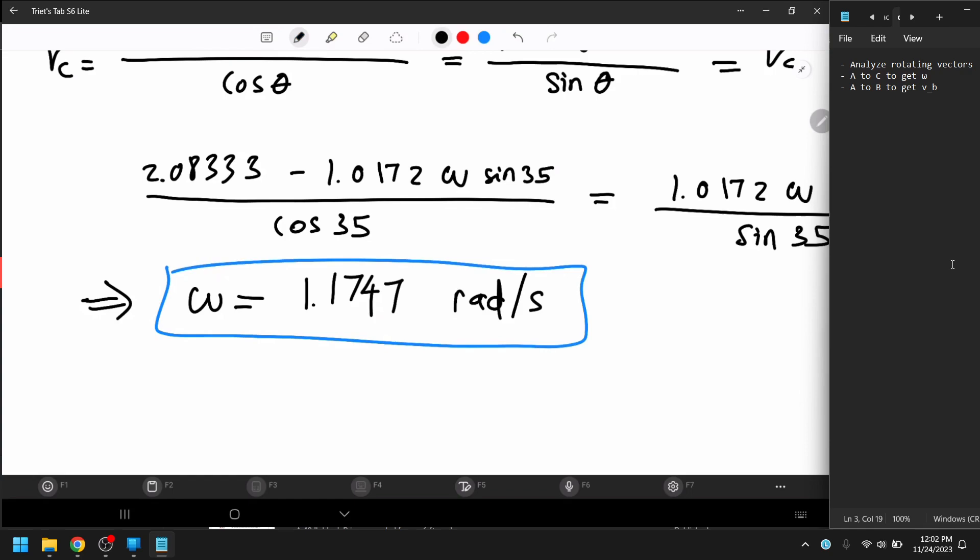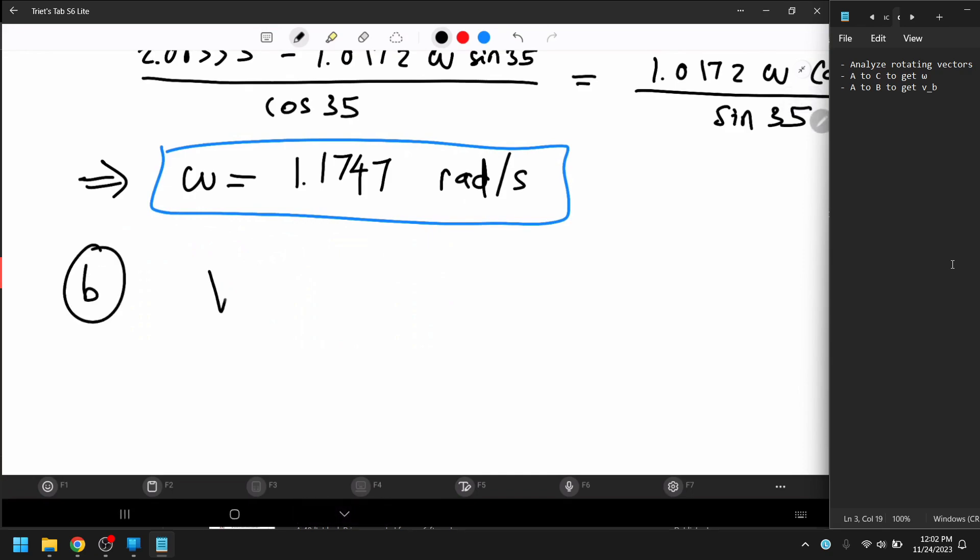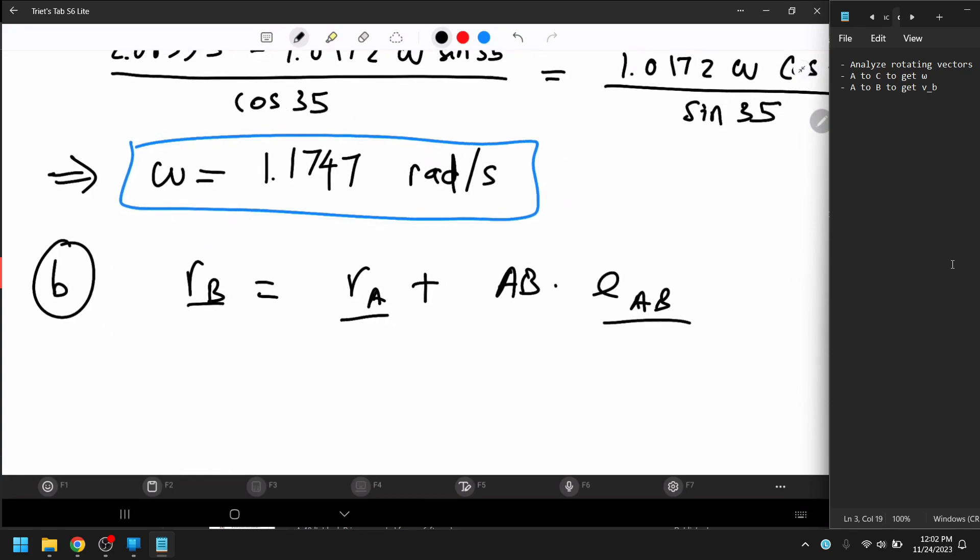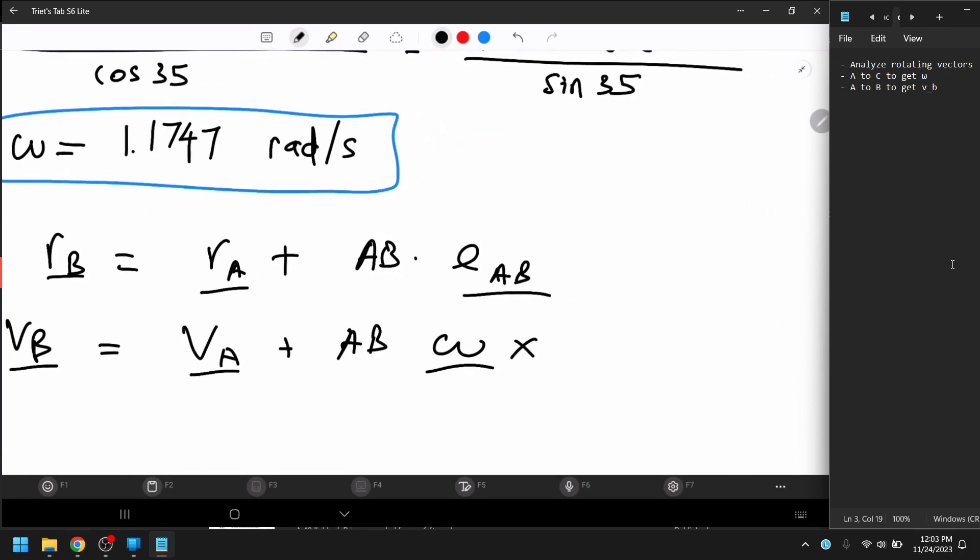And then, we're going to now, for B, we're going to know the velocity. B, right? So, we take the first derivative. V_B equals V_A plus AB omega, which we knew. That's good. So, it's going to be k cross with E_AB itself.